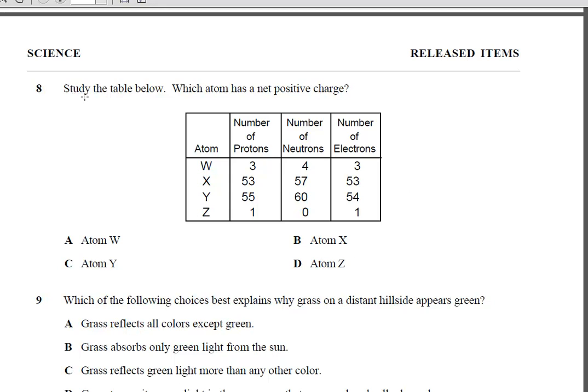Study the table below. Which atom has a net positive charge? Net meaning total. So the total charge is a positive one. We have 4 pretend atoms and the number of protons. Protons are positive. Neutrons are no charge, so we can ignore all of these. The number of electrons. Electrons are negative.